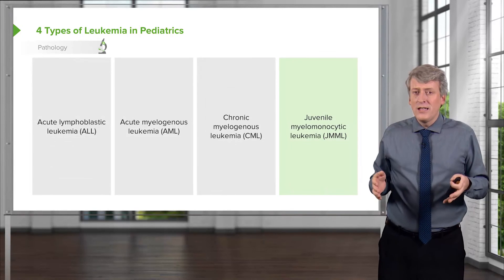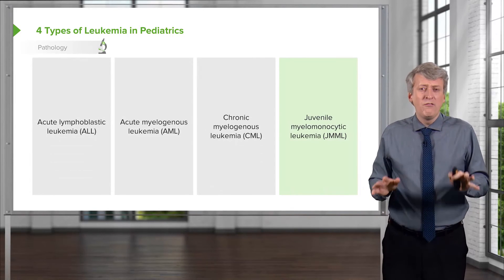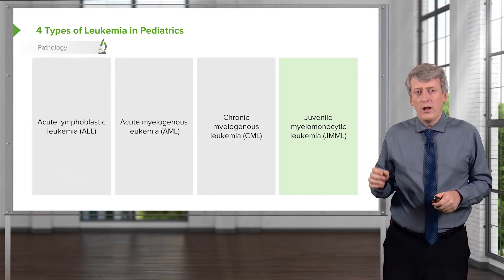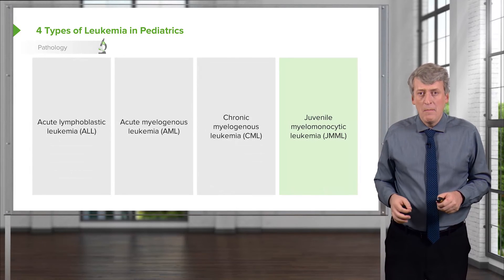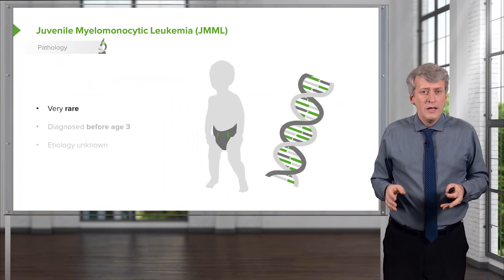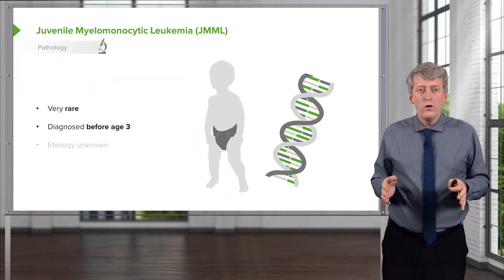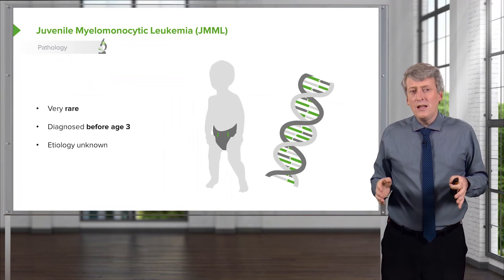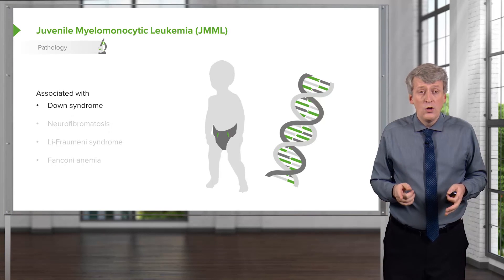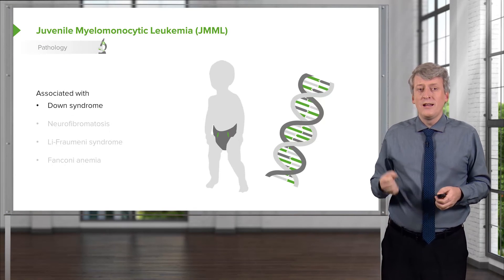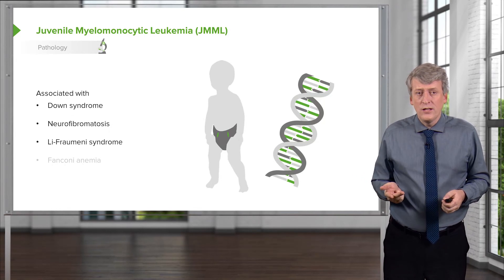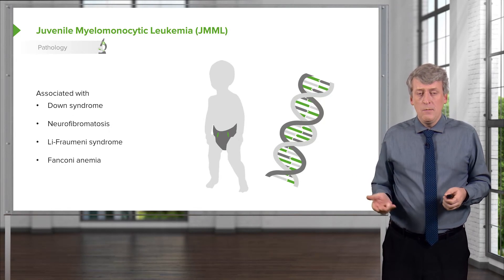Lastly, we'll talk briefly about the very rare form of leukemia, juvenile myelomonocytic leukemia, or JMML. JMML is very rare, usually diagnosed before the age of three, and the etiology is basically unknown. It is associated, however, with a few genetic conditions like Down syndrome, neurofibromatosis, Li-Fraumeni syndrome, and Fanconi anemia.